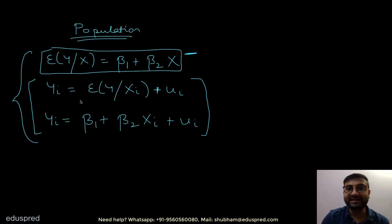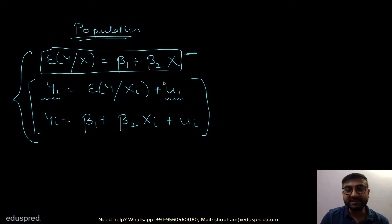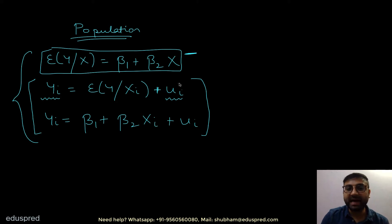The second and third equations are written at an entity level. So if you have collected data on different households, then your entities will be households. The left-hand side yi means the value of the y variable for the ith household, and ui means the error of the ith household in the population. When you write the equation at an entity level, you have to add the error term.